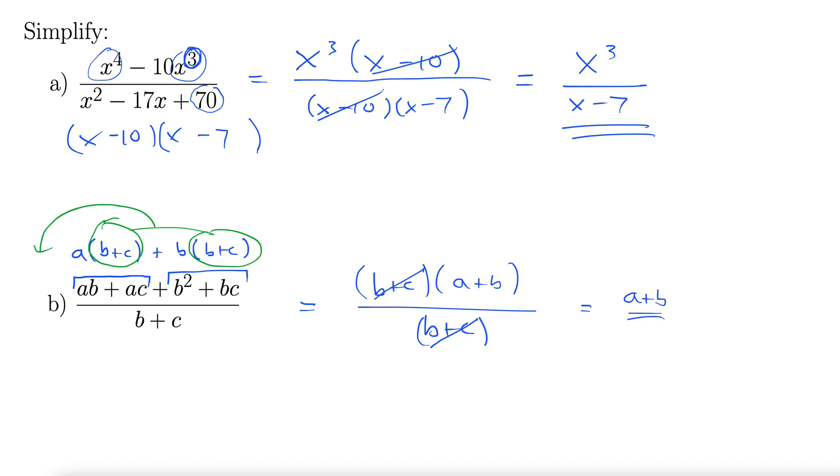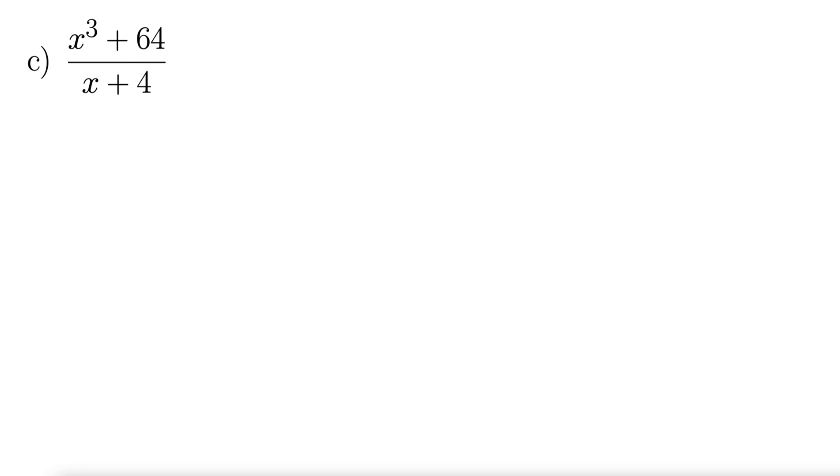Let's try another one. For part c here, we have x cubed plus 64 divided by x plus 4. And one thing to jump right out with this one, that term in the numerator is the sum of cubes. x cubed is clearly a cube, and 64 is also a cube.